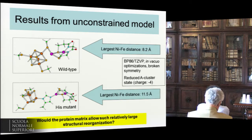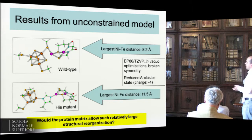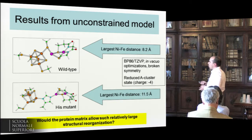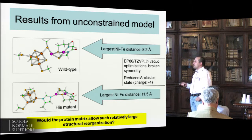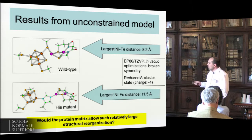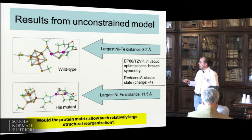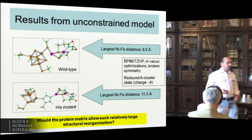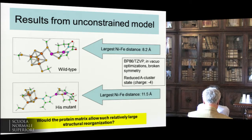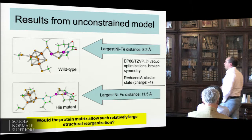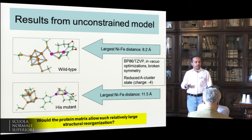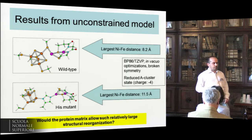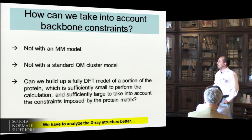After substituting the cysteine with an imidazole ring in the wild-type form, what is interesting is that this active site, calculated with DFT in vacuum, expands by more than three Ångstroms. The question is obviously whether the protein matrix would actually allow such a reorganization at the level of the A-cluster.